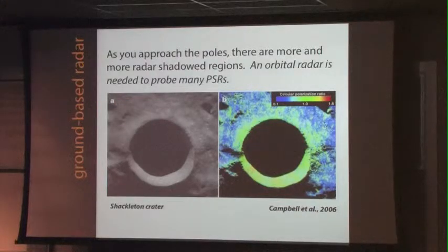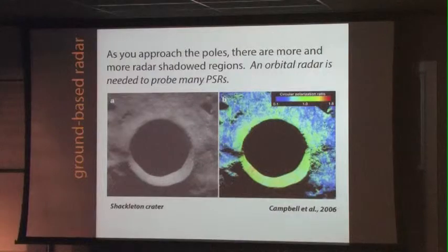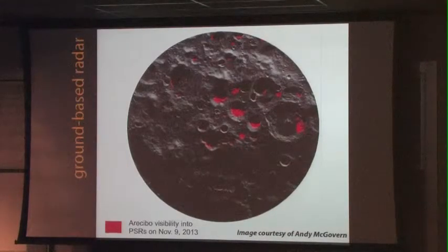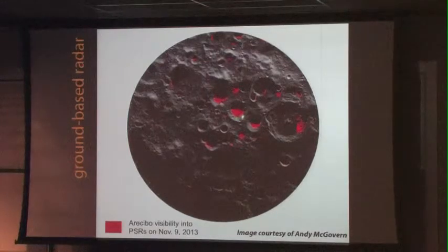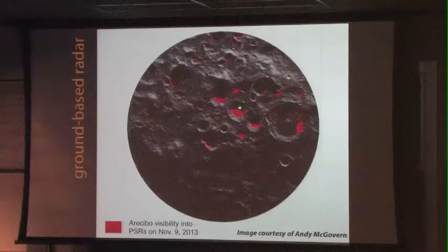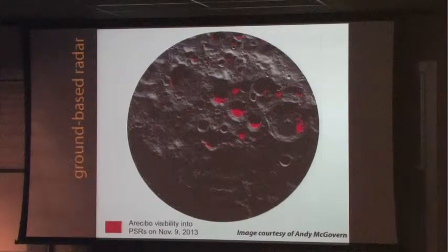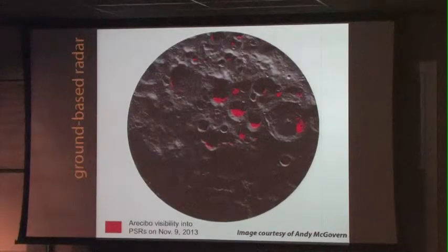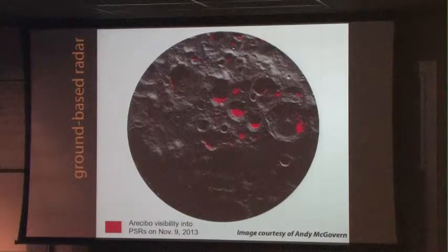Here's another example: Shackleton crater taken from Earth. They were able to see into portions of the permanently shadowed regions, but quite a bit remained hidden. This was the motivation for getting an orbital radar to peer into these permanent shadow regions that hadn't been studied well in radar previously. And as Andy McGovern showed, while we can see into some permanently shadowed regions from Earth with radar, there still remains quite a bit of shadow — which convinced people that we really need an orbital radar.